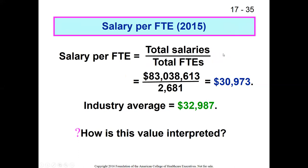Salary per FTE: here you take the total amount spent on salaries divided by total FTEs in the organization. This organization spends $83 million on salaries with 2,600 FTEs, so they're spending an average of $30,973 per FTE. The industry average is $32,987, so they have a slightly lower salary per FTE ratio. How do we interpret this?